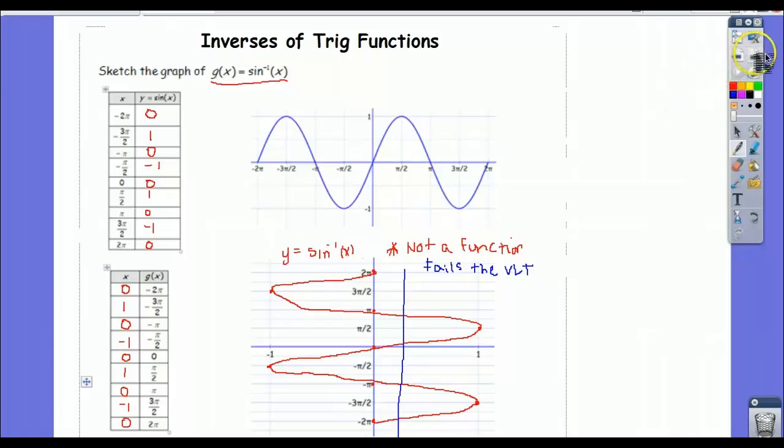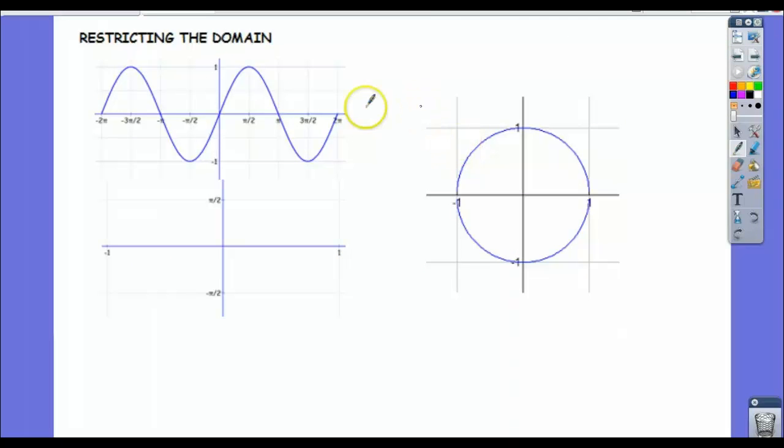So in order to fix that, in math what we do is we call it, we do what's called restricting the domain. So what do I mean by that? Well, here is our sine graph again. And clearly I can't just take the inverse of this whole picture because if I do that, it will fail the vertical line test. Now the reason it, I'm sorry, its inverse will fail the vertical line test.